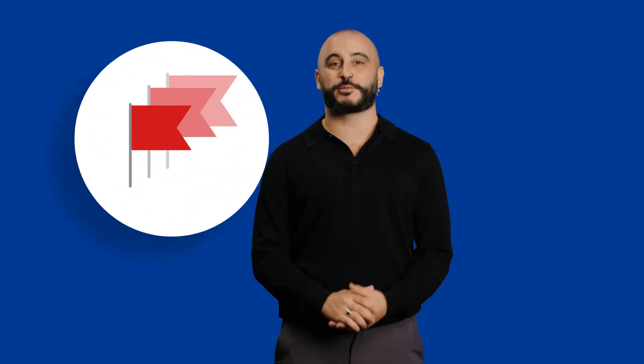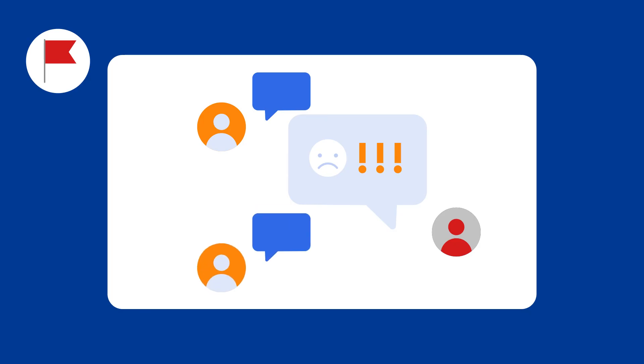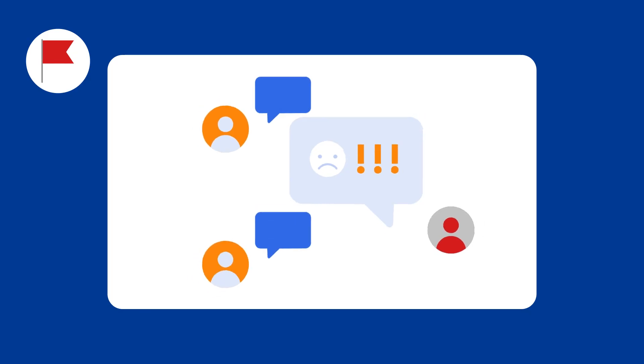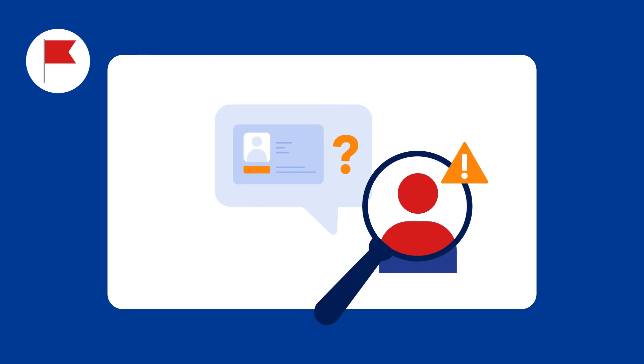Here are the top social engineering red flags to look out for. First, a sense of urgency — cyber criminals often exploit human emotions and errors to manipulate individuals into acting quickly and against their interests. Booking.com employees will never ask for your personal credentials. Always verify the identity of the person you're communicating with, especially if they ask for sensitive information.